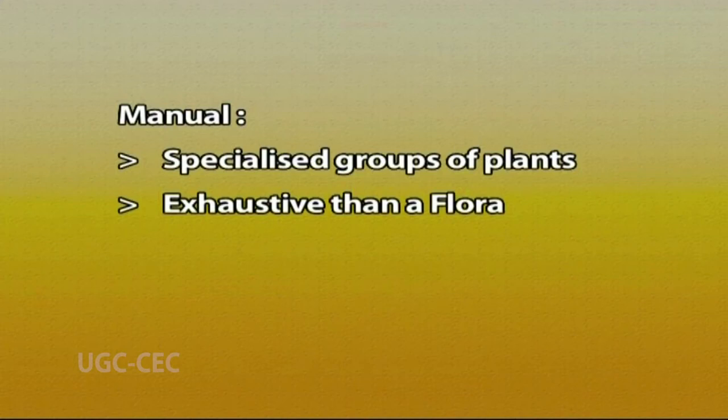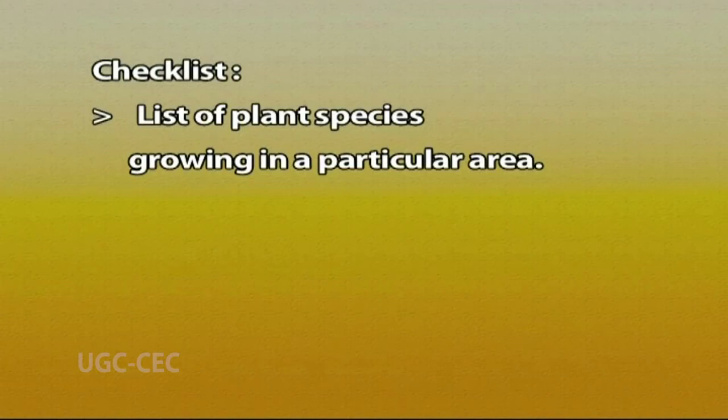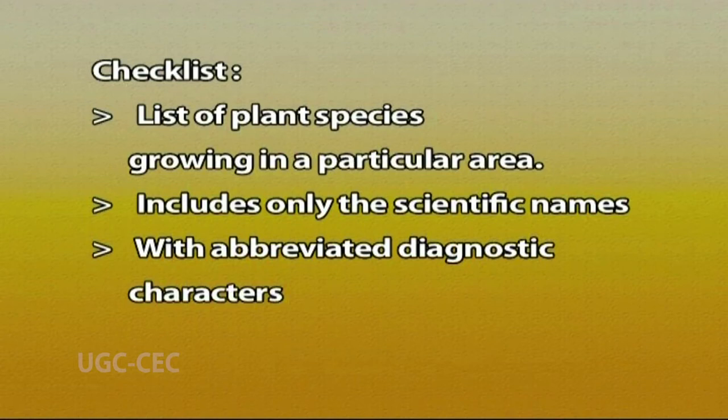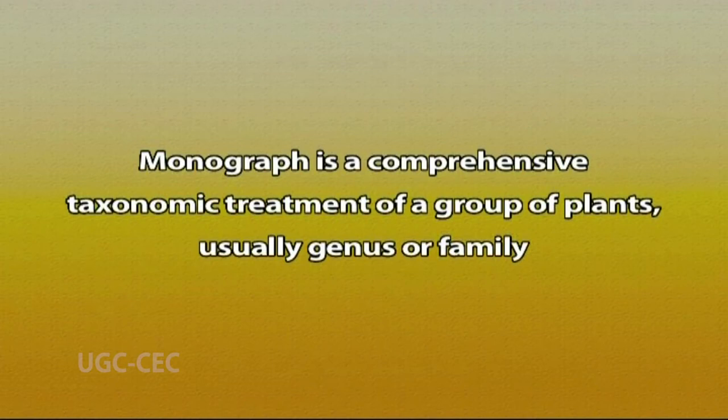A manual covers specialized groups of plants and is more exhaustive than a flora; it includes identification keys, descriptions, and a glossary. A classical example is A Manual of Cultivated Plants by Bailey, published in 1949. A checklist basically provides a list of plant species growing in a particular area, including only the scientific names along with abbreviated diagnostic characters and local distribution. A monograph is a comprehensive taxonomic treatment of a group — usually a genus or family — providing all available taxonomic data. Classical examples are The Genus Crepis by Babcock in 1947 and The Genus Aralia by Wen in 2011.